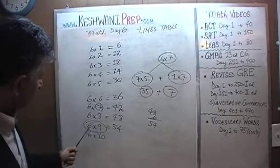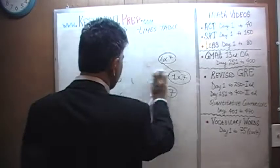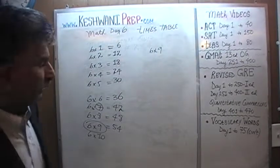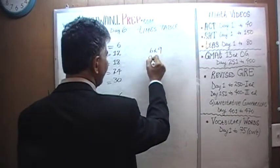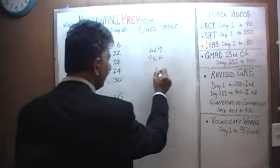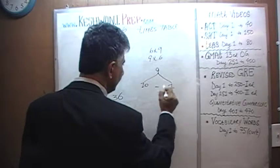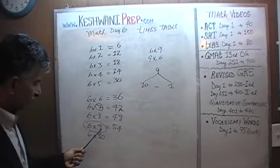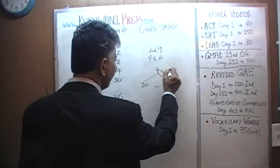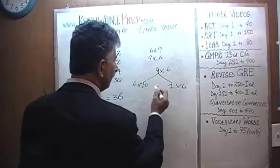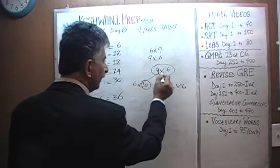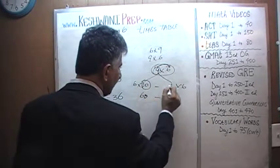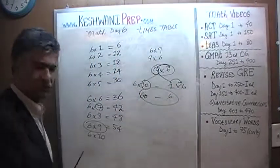How else could we have figured out six nines? It's very easy. If you have to figure out six nines in your head, here's a trick: six nines is the same as nine sixes, and nine can be written as ten minus one. So nine sixes is the same as ten sixes, which is sixty, minus one six. One six is six. Sixty minus six is fifty-four.